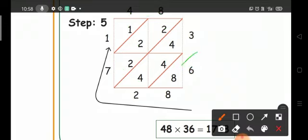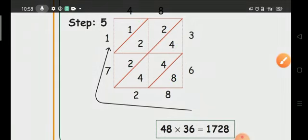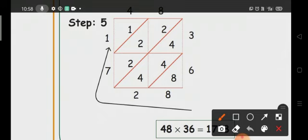Now these are all on the diagonal side. Let's add the numbers in the diagonals. Here, only 8, so write 8. And this diagonal: 4 plus 4 equals 8, 8 plus 4 equals 12.